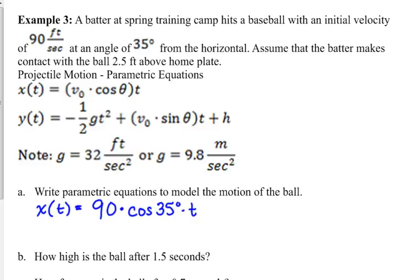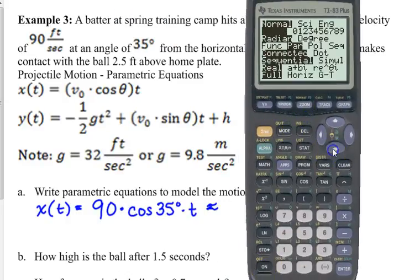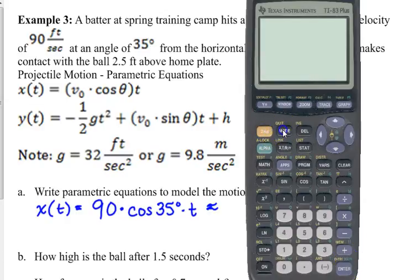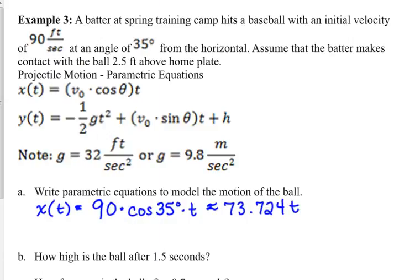Now I don't know whether they want us to multiply this out or not, so I'm going to go ahead and give us that version. Make sure that you are in degree mode. When you're plugging in degrees into your trig function, you need to be in degree mode. The parametric versus polar versus function does not matter for this part. That pretty much only matters when you're graphing. So 73.724t is approximately our horizontal part of the parametric equation. It is a linear function that is describing its horizontal distance from where it started.